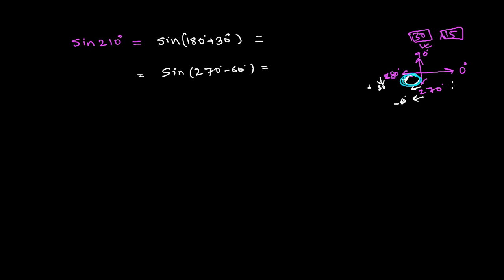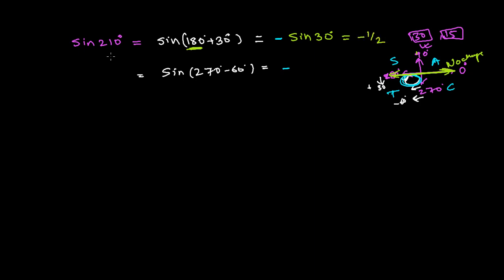Now confirm the quadrant: we're in the third quadrant. According to the CAST rule, in the third quadrant only tangent and cotangent are positive; the rest are negative. Since we have sine, which is negative in the third quadrant, we put a negative sign. We're using the 180-basis, and whenever we're on the 0°/180°/360° line, there is no change in the ratio — so sine stays sine. The angle is 30°, giving us sine 30° = 1/2, so sine 210° = −1/2.